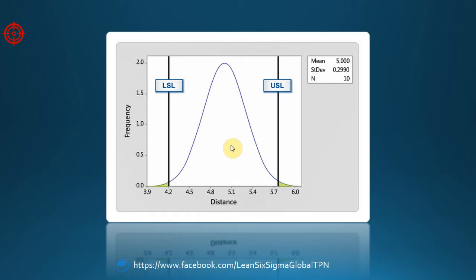From the graph, we can see that the probability of the gauge measuring the part outside the specification limits is essentially zero. Based on this information, our measurement system is precise.